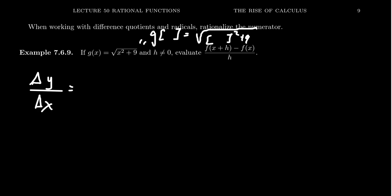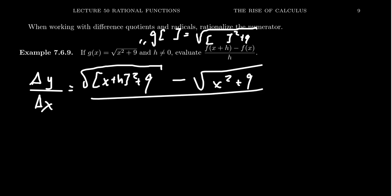So that blank will sometimes be an x, sometimes will be an x plus h. So we're going to get x plus h squared plus 9. That all sits inside of a square root. And then we subtract from that a square root of x squared plus 9. This all sits above an h, like so.